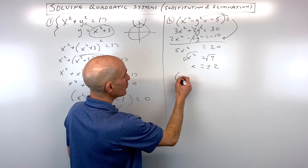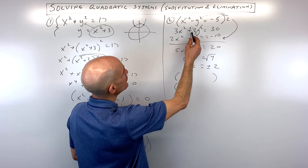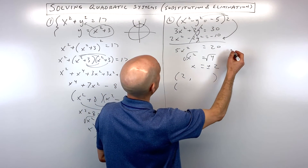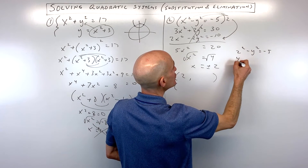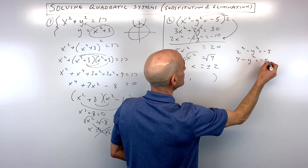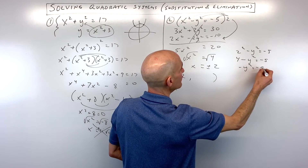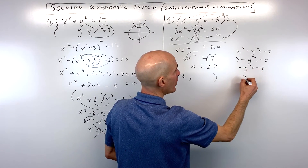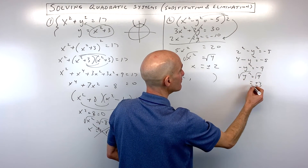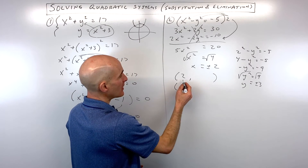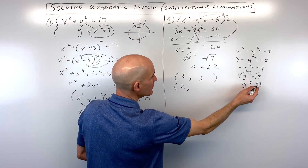When x equals 2, substituting back into the top equation: 2 squared minus y squared equals negative 5. 2 squared is 4; subtracting 4 from both sides gives negative y squared equals negative 9; multiplying both sides by negative 1 gives y squared equals 9; taking the square root gives plus or minus 3. So when x is 2, y can be 3 or negative 3.